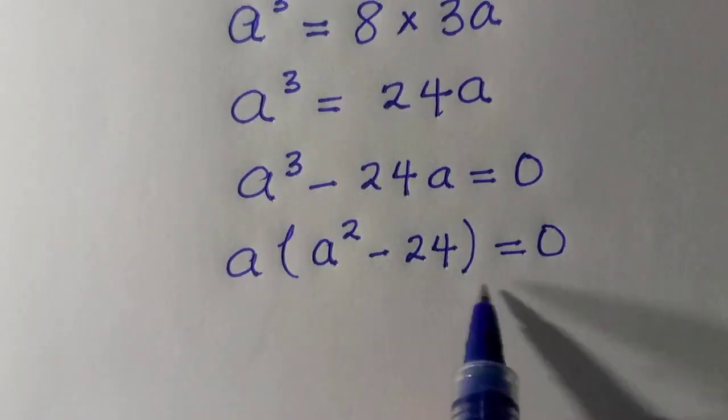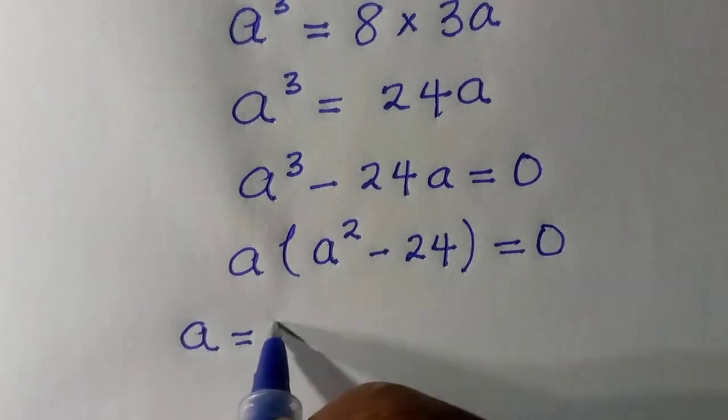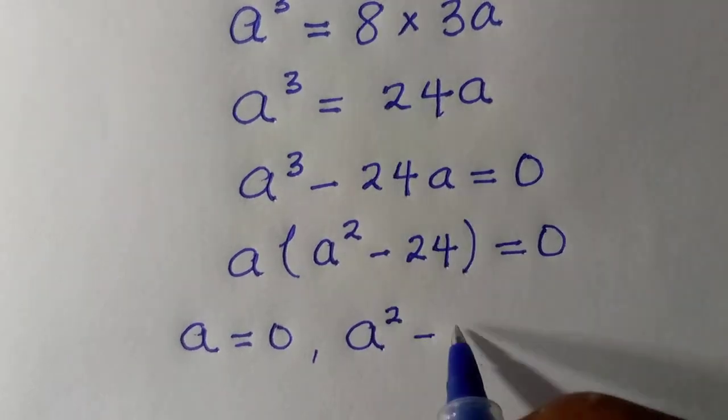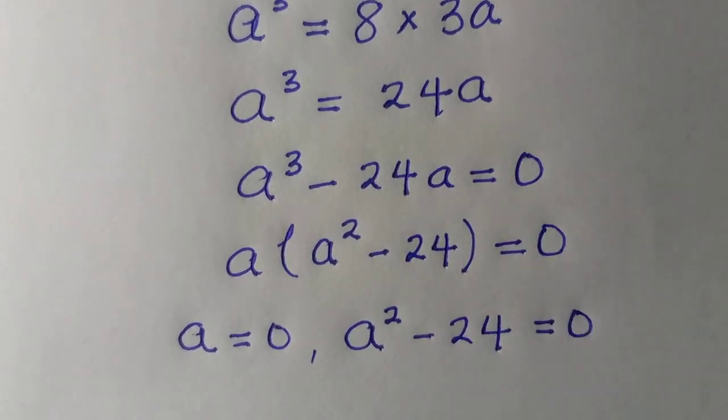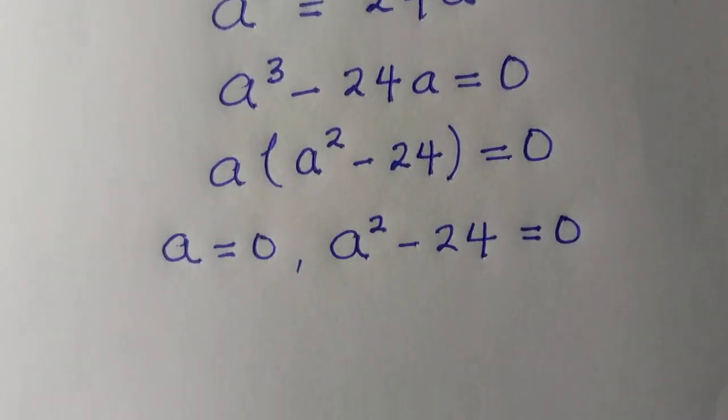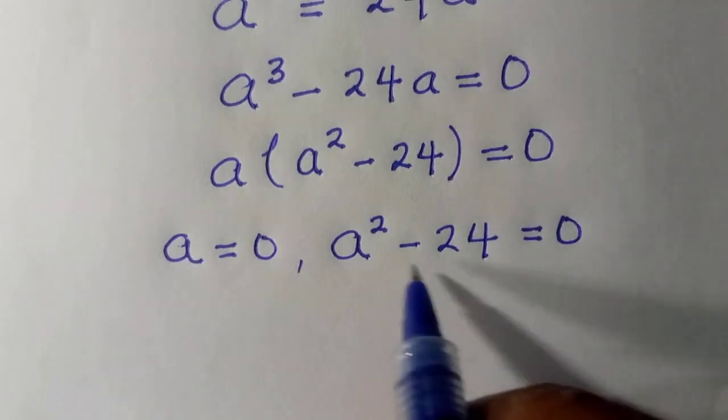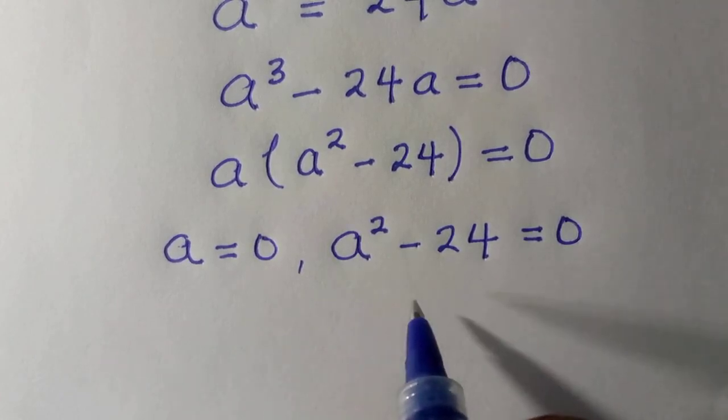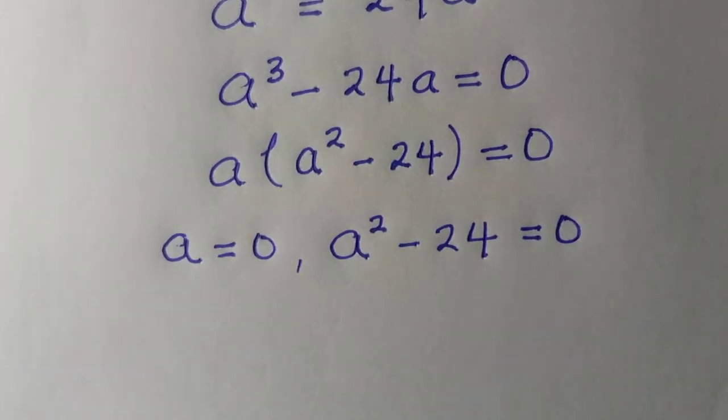So for all these expressions to be equal to 0, it means that we let a equals 0, or we let a squared minus 24 equals 0. So we have the first root as a equals 0, and then we have this second one, which we have not gotten the value yet.